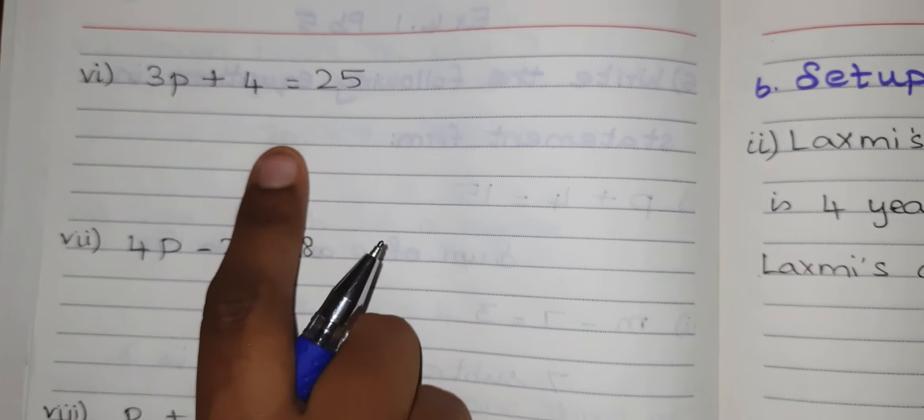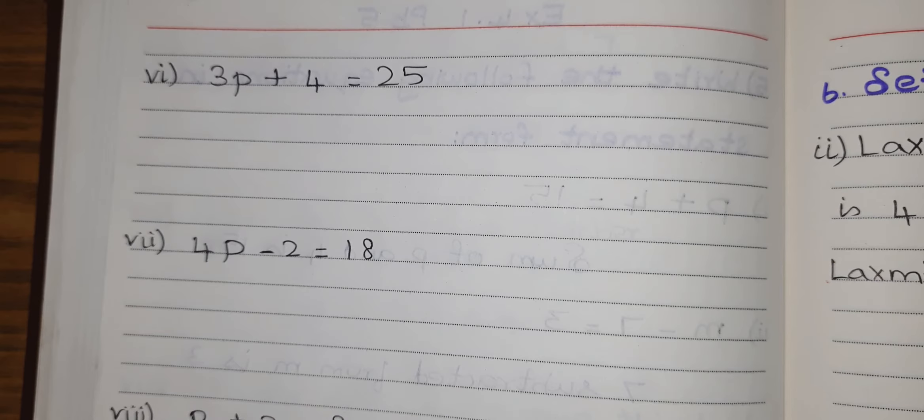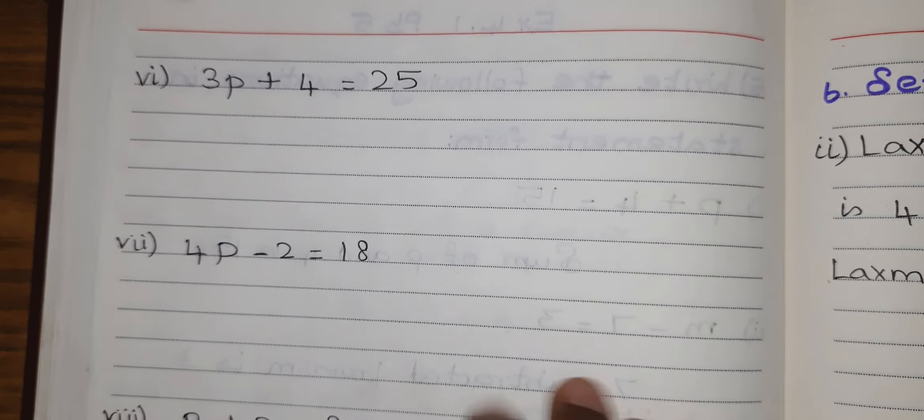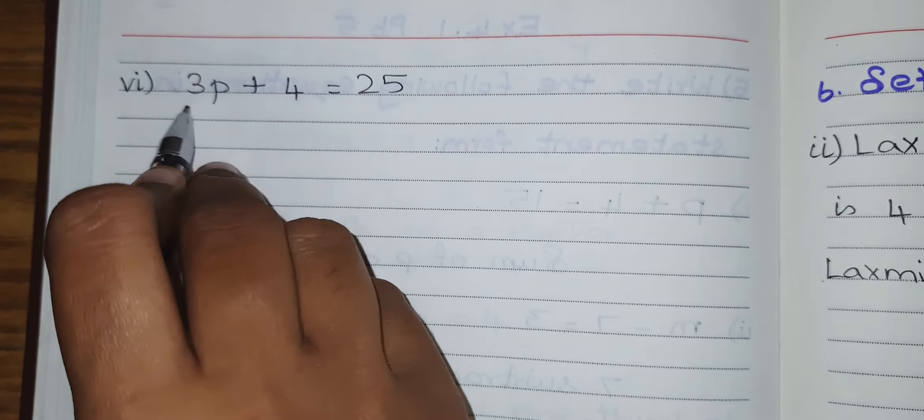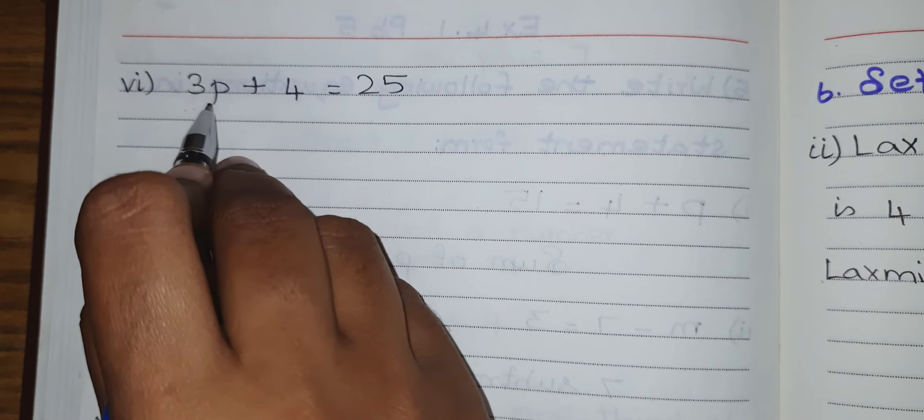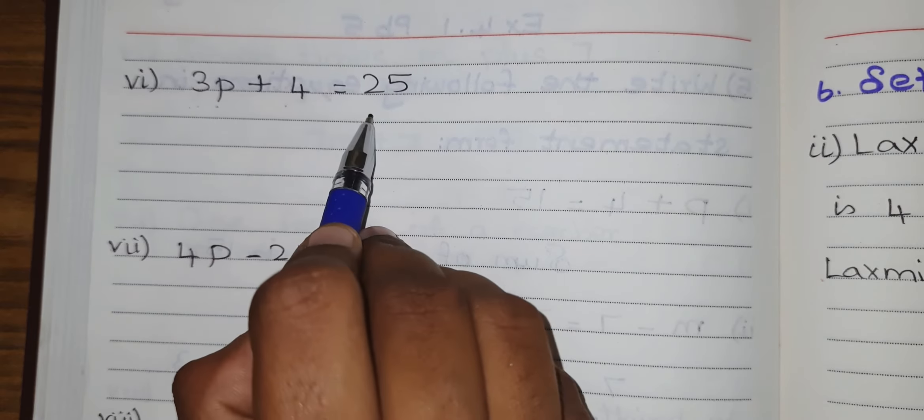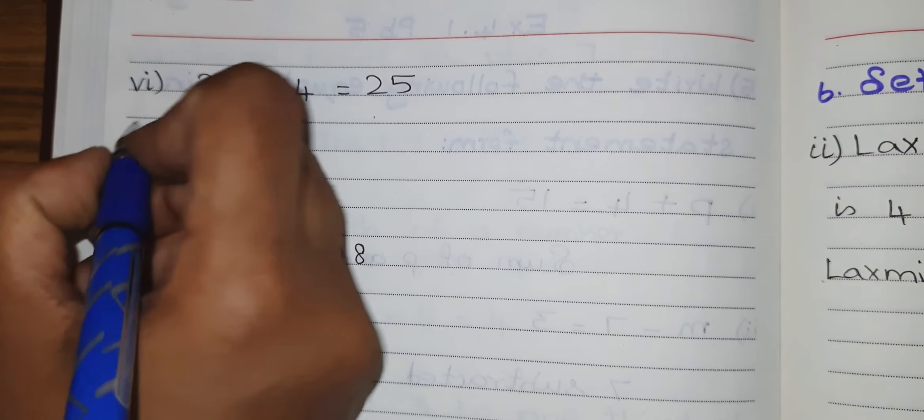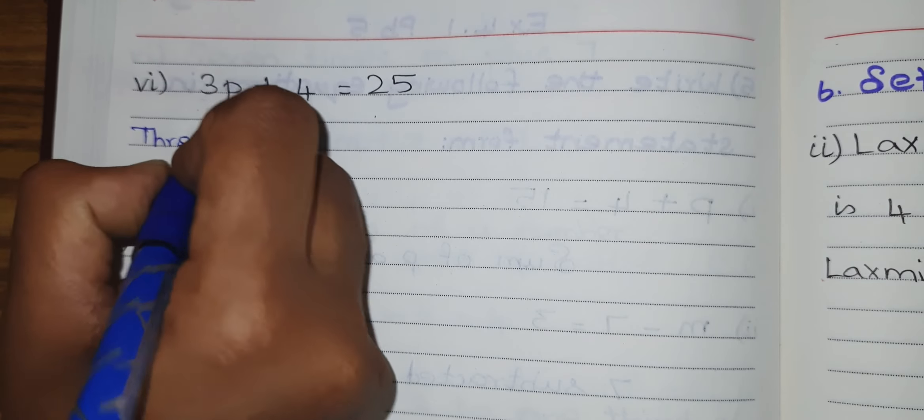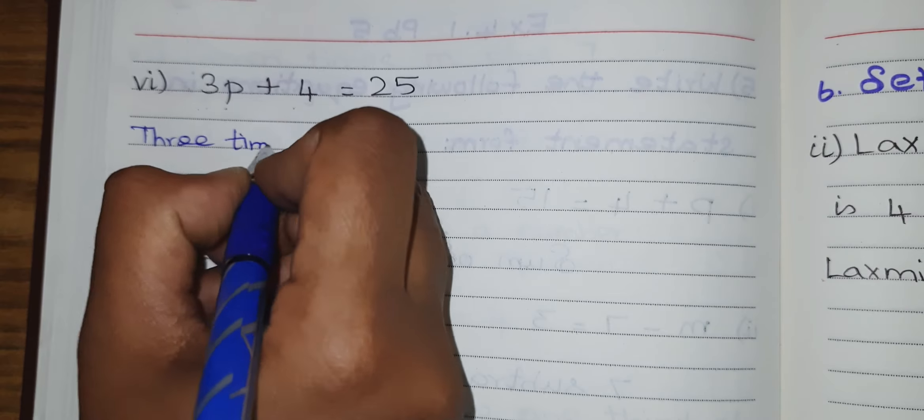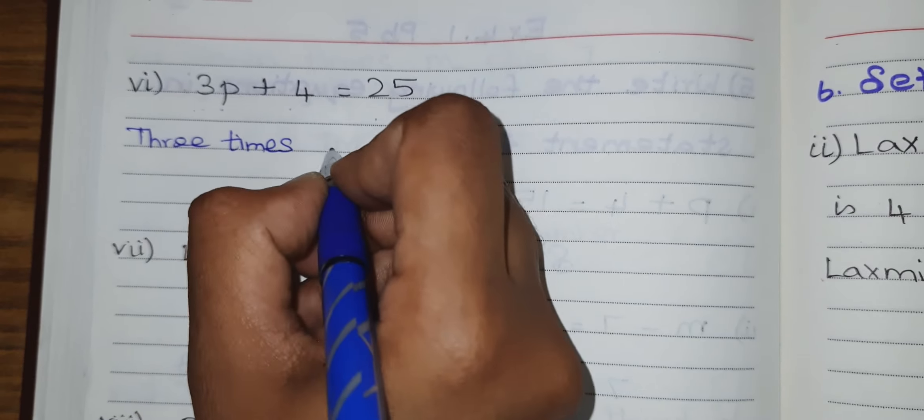3p plus 4 equal to 25. It means 3p means 3 times of p, and it should be added to this 4 to get 25. You have to write: 3 times a number p, when added to 4, gives 25.